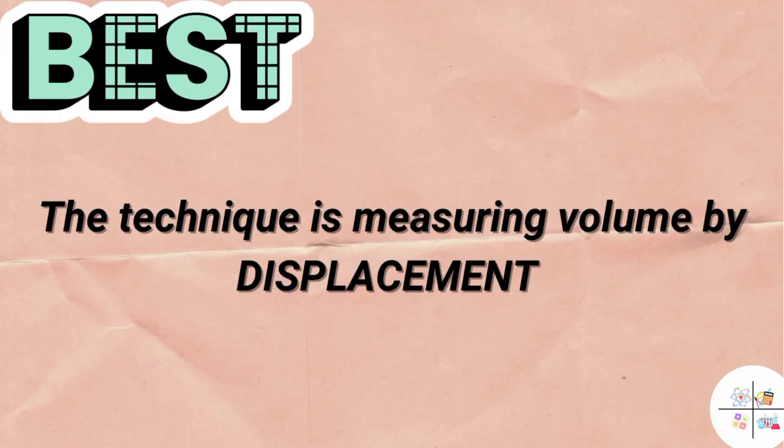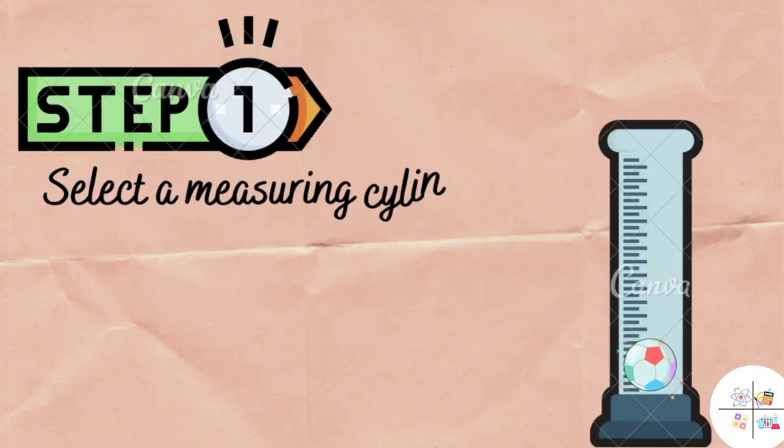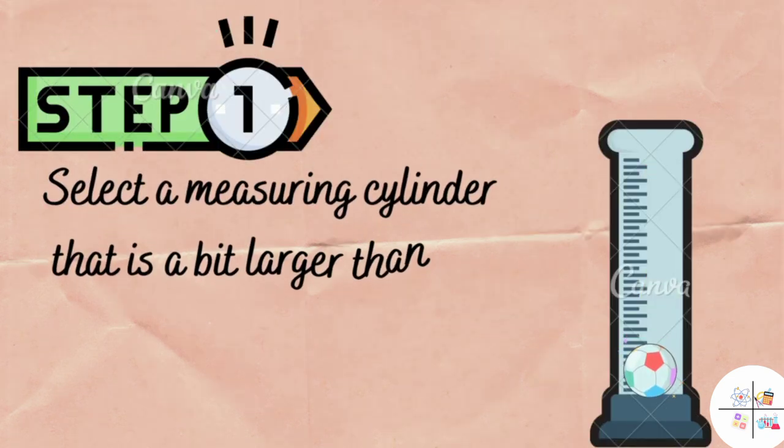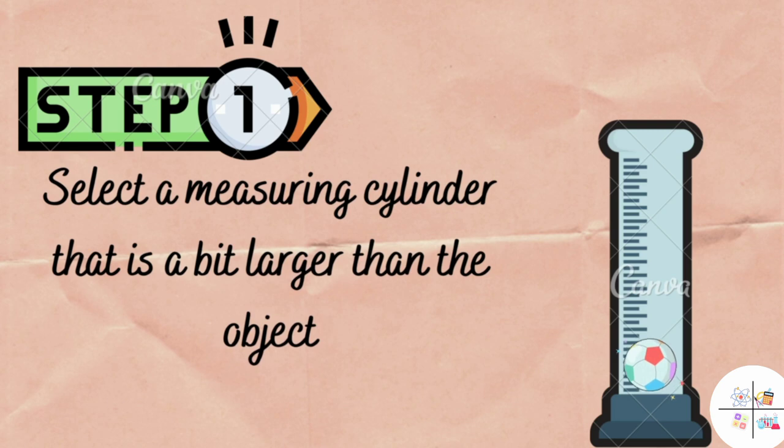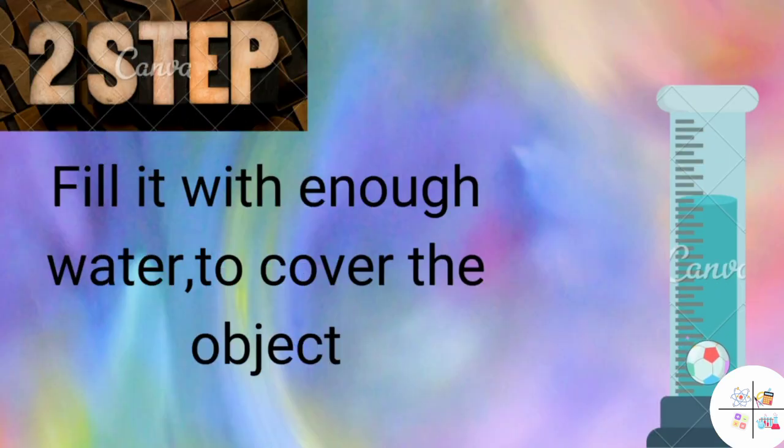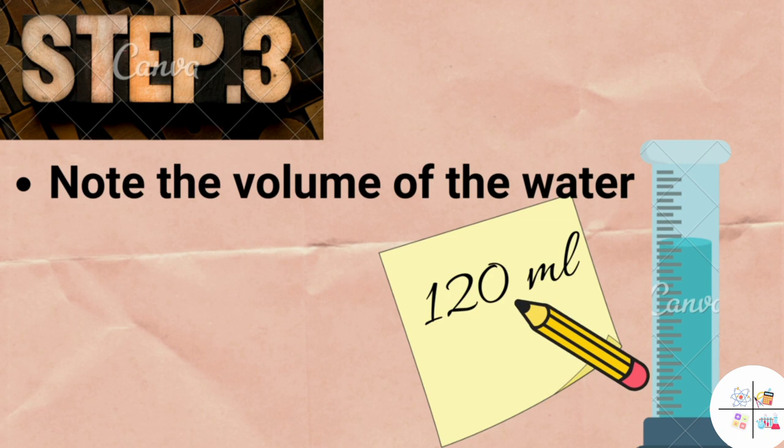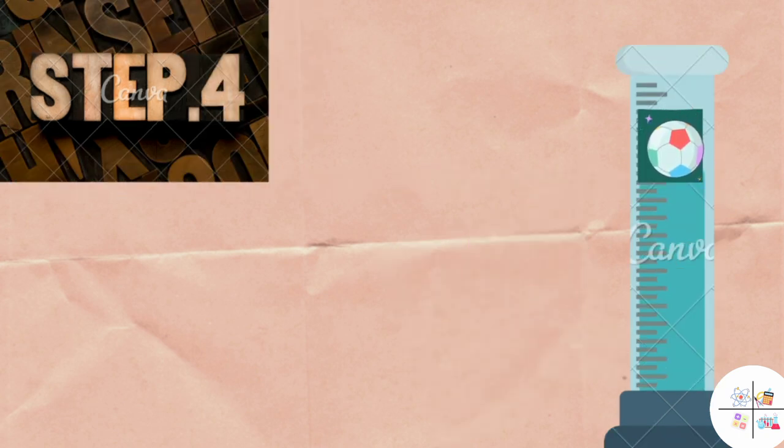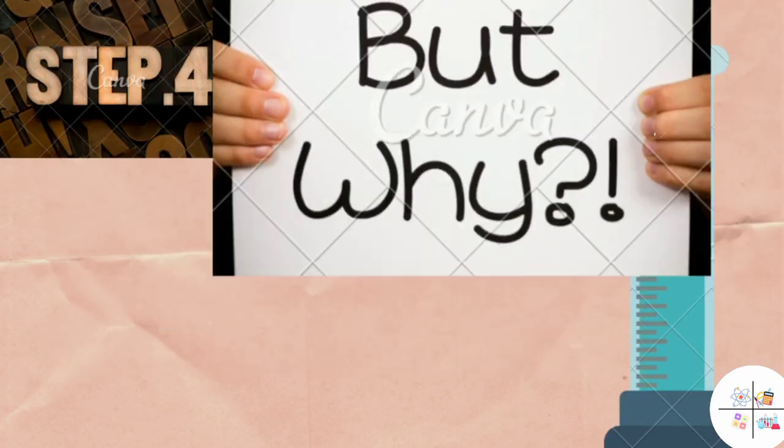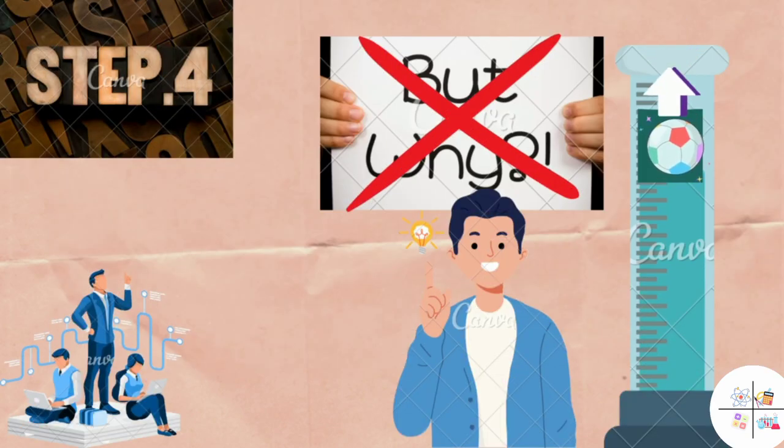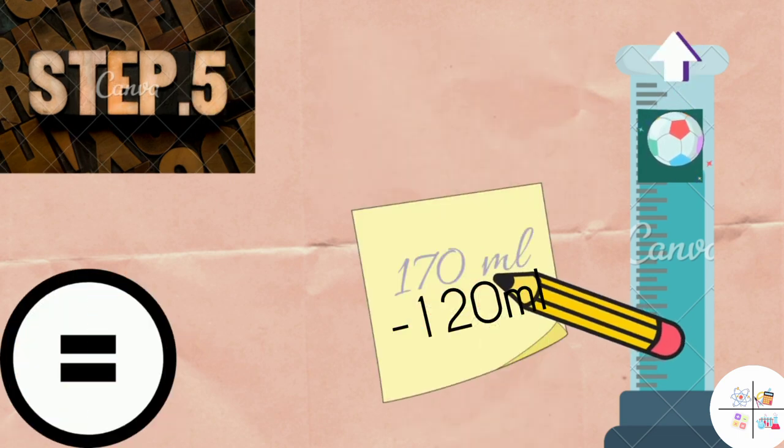The steps are really simple. Step number one: select a measuring cylinder that is a bit larger than the object. Step two: fill it with enough water to cover the object. Step three: note the volume of the water. Step four: dip and push the object in the water. The level of water will increase because the object pushes the water out of the way, and the only way it can move is upwards.